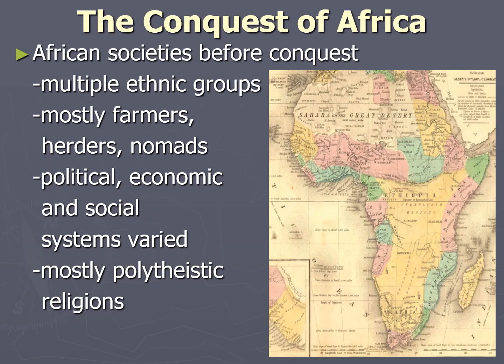Now we can begin to talk about European imperialism in Africa specifically. In order to do that, we first need to look at African societies before European conquest, which is not such an easy thing to do. Africa is a huge continent and its peoples are as diverse as its landscape, so it is really hard to make general statements. Typically we simplify this by breaking Africa into regions, usually dividing it from north to south at the Saharan desert, and also talking about Africa in terms of east-west.